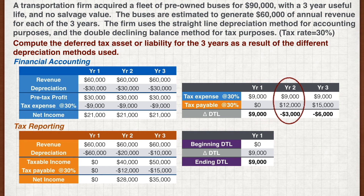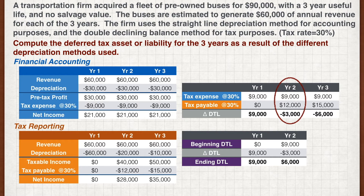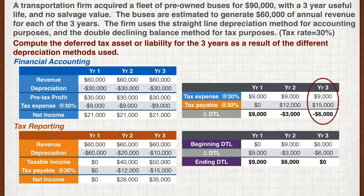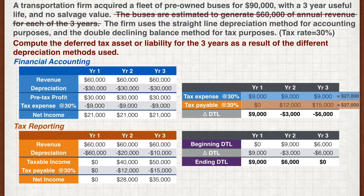In the second year, the tax expense is again $9,000, while the tax payable is now $12,000. The difference between the two is minus $3,000, so the deferred tax liability is reduced to $6,000 in the second year. In the third year, the change in deferred tax liability is minus $6,000, leaving zero deferred tax liability for the buses at the end of the third year. Notice that total taxes are the same for tax expense and tax payable, and the deferred tax liability reverts to zero, confirming that tax savings or overpayments in early years reverse in later years.